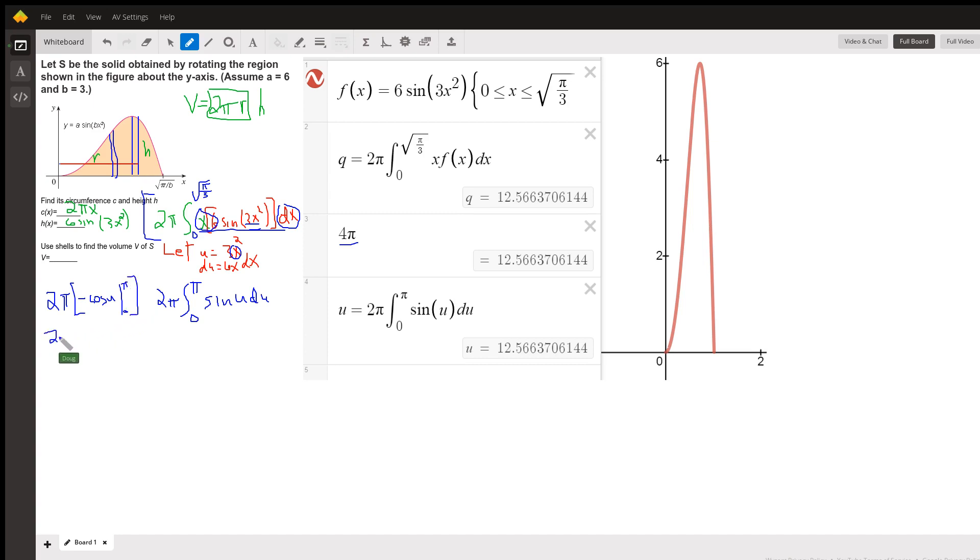So that's 2π times—I like to do it this way—negative cosine of π minus (minus negative cosine of zero).